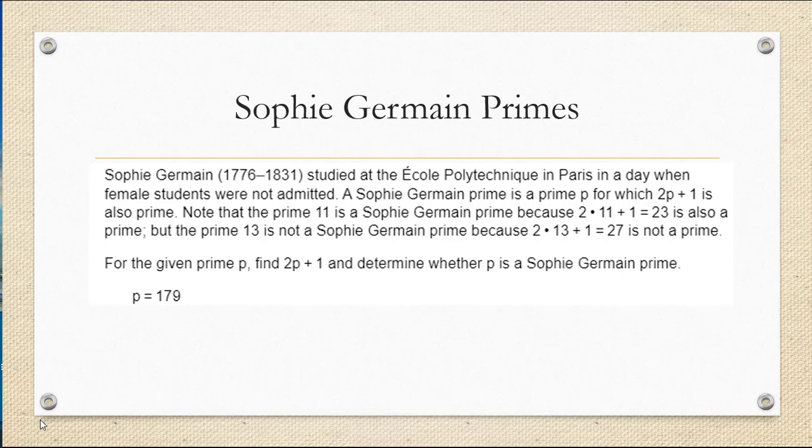Our task is, given the prime p equals 179, find 2p plus 1 and determine if that's prime so that we know if 179 is a Sophie Germain prime or not.